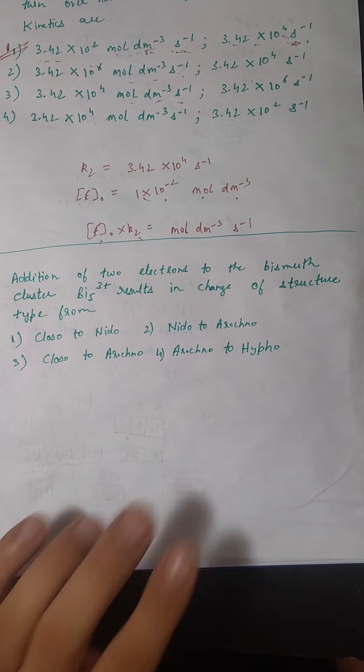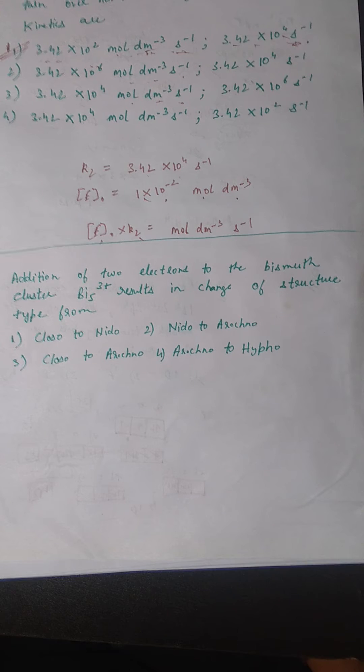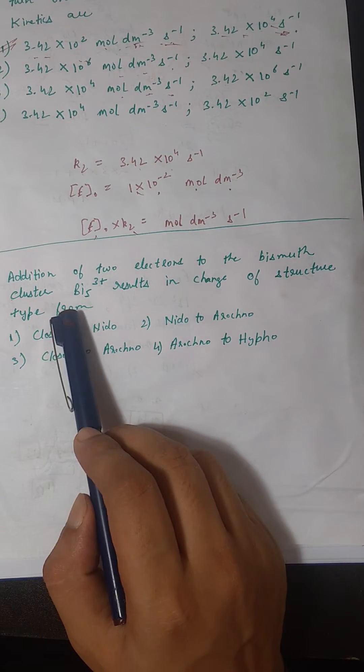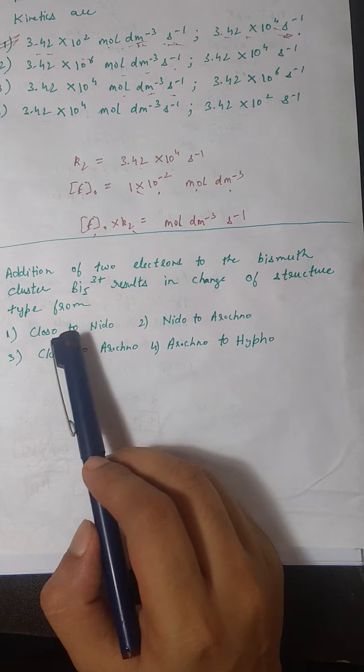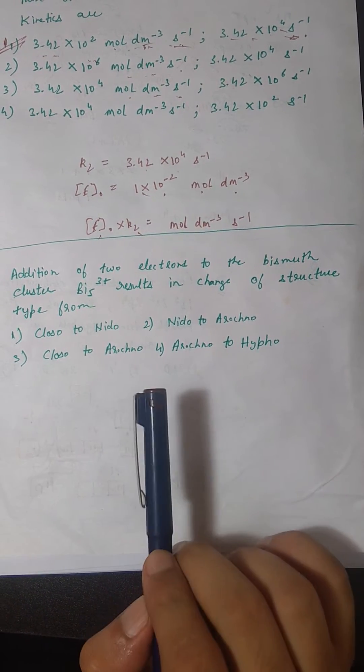This is a simple four-mark question from the inorganic portion. The question asks: addition of two electrons to the bismuth cluster Bi5³⁺ results in change of structure type from closo to nido, nido to arachno, closo to arachno, or arachno to hypo?